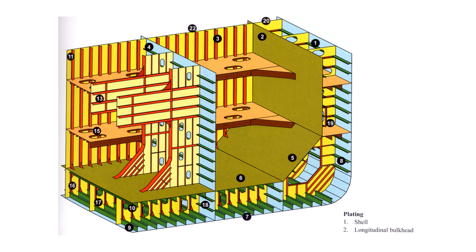Number five shows the lower hopper tanks, located just below the longitudinal bulkhead. Number six is the tank top, and below that are the double bottom tanks, which is number seven. Number eight shows the side longitudinals running in the longitudinal direction. Number nine is the bottom frame, including longitudinals. Number ten is the inner bottom longitudinals. Number eleven, shown in red, are the bulkhead stiffeners, provided at intervals to strengthen the bulkheads.